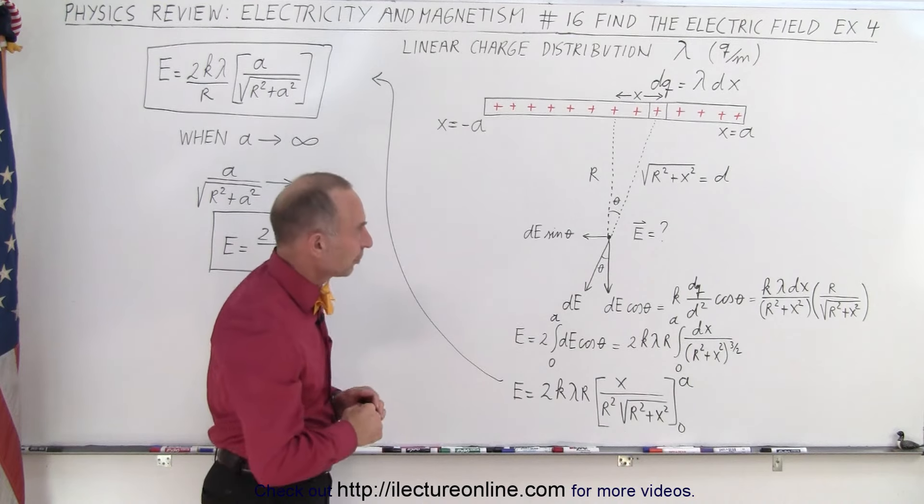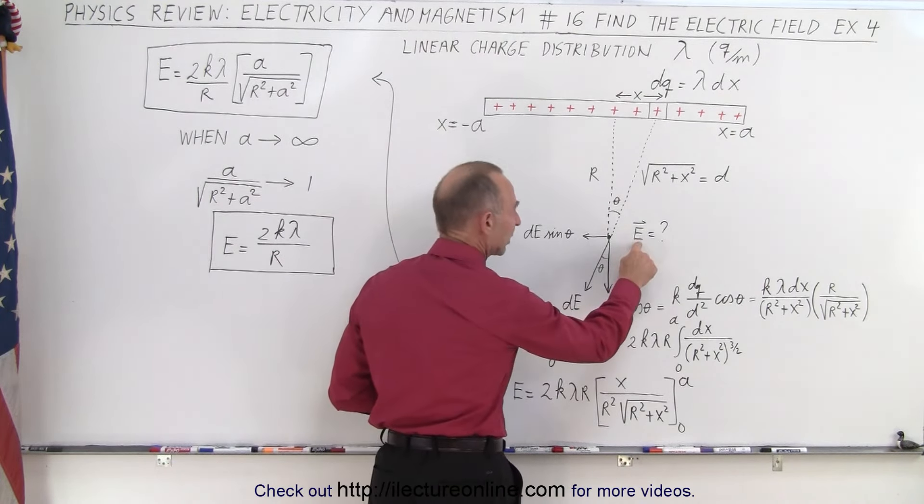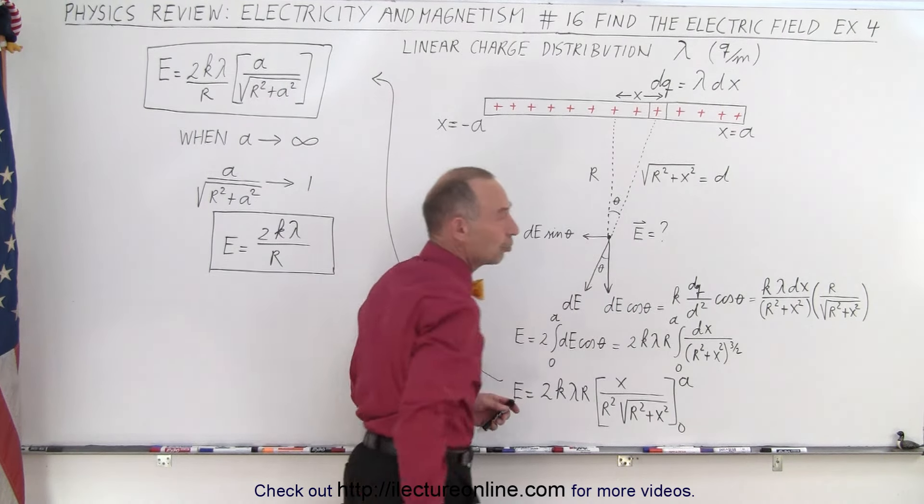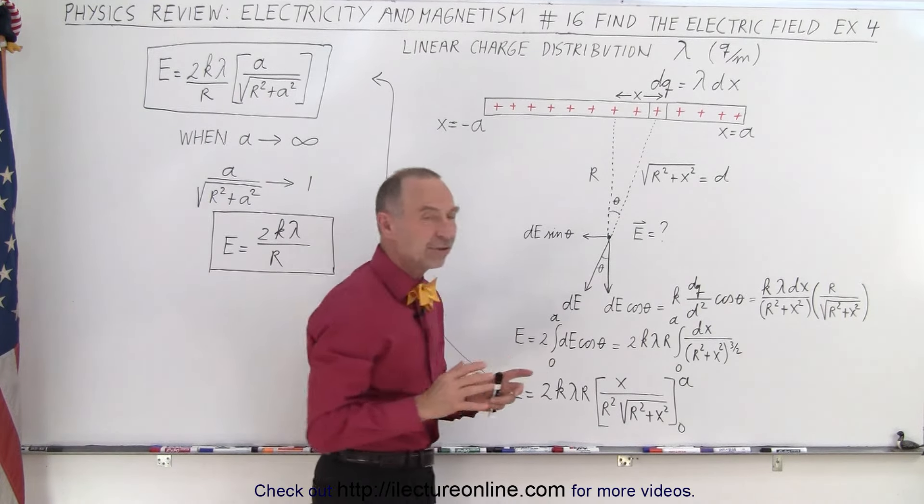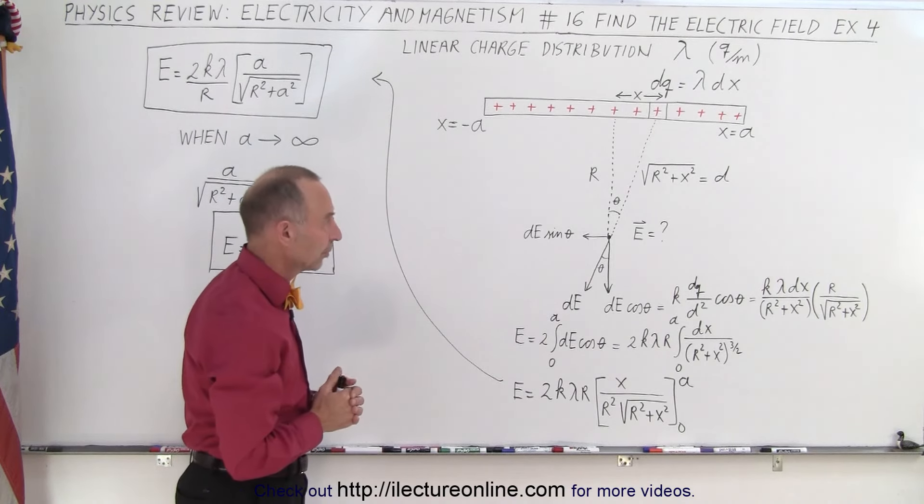So the approach is a little bit different. What we do want to do is place the point where we want to find the electric field right at the midpoint of the line distribution. We can do it otherwise, but for now it's easier to do it like this, and then we'll see how we need to adapt it by putting it somewhere else.